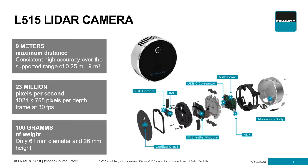It has a very small form factor and only weighs 100 grams — smaller than a tennis ball in diameter at only 61 millimeters. The principal setup includes the body, the ASIC board, a USB-C connector, and an auxiliary hardware connector for synchronization and triggering. There is a module with the IR emitter and receiver, an IMU so you can get data from the movement of the LiDAR itself, and a full HD RGB camera.